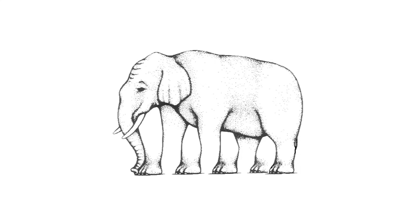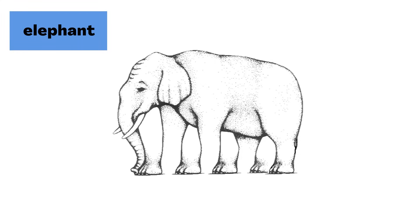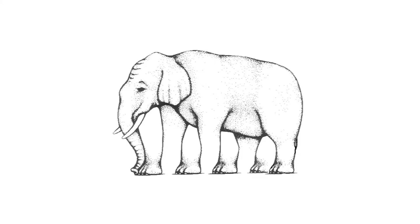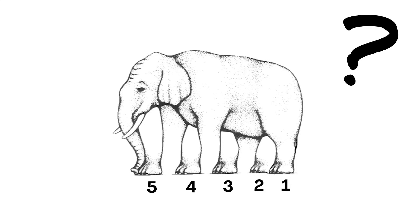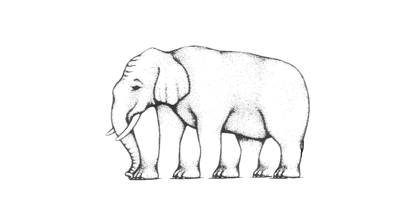I want to show you another optical illusion. This one has more detail, so I think we can agree on what animal it is — an elephant. I wonder if you noticed something strange though. Check out the elephant's legs. If I count the feet, it has one, two, three, four, five feet? That can't be right. Let's count the legs.